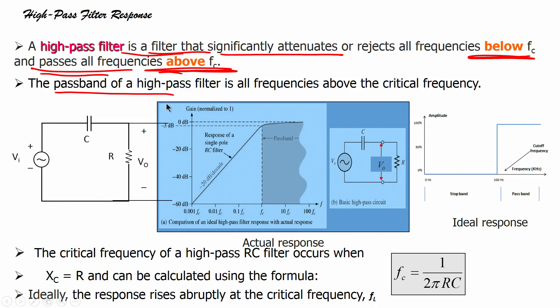The pass band of a high pass filter is all frequencies above the critical frequency. It will allow frequencies which are above the critical frequency. In the last module, the low pass filter allowed frequencies below critical frequency to pass, while in the high pass filter, frequencies above critical frequency are allowed to pass. This is the ideal response — there is a brick wall exactly at FC where frequencies stop. This is the stop band and this is the pass band.